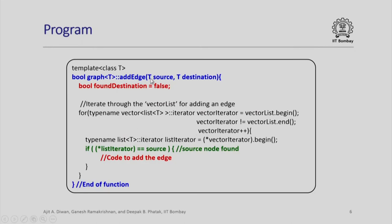Let us look at the add edge function. We begin with the assumption that the destination is not found, so we set false to the bool found destination. Now we have the same iteration that we have seen earlier using the iterator vector iterator. Again, for each iteration we start with the vector iterator dot begin for that particular vector list, and now we will look at all the elements of that vector list. First, we see the source. If the iterator is equal to source, we have found the source, otherwise we will have to go to the next list.